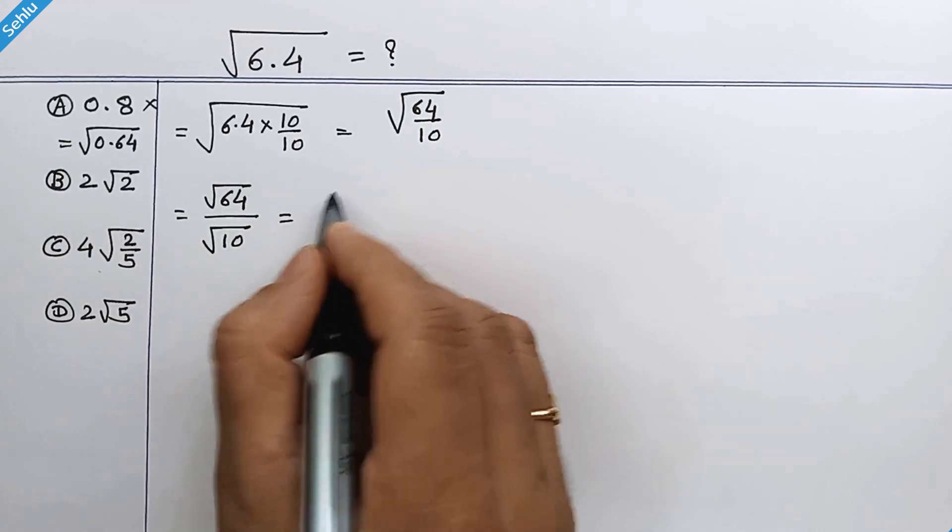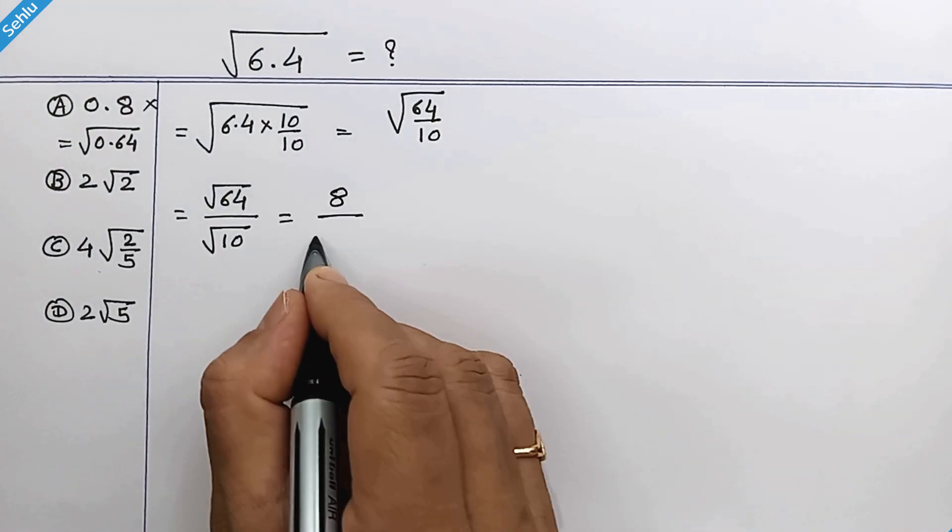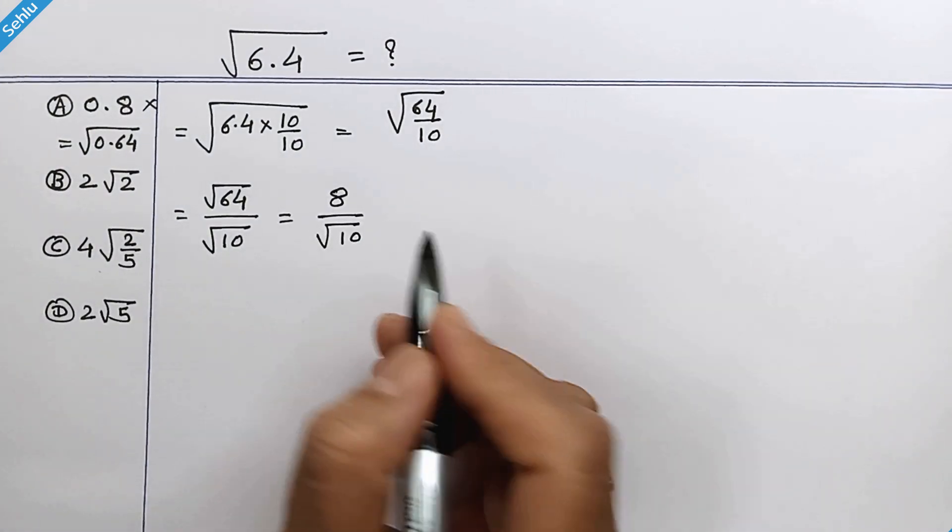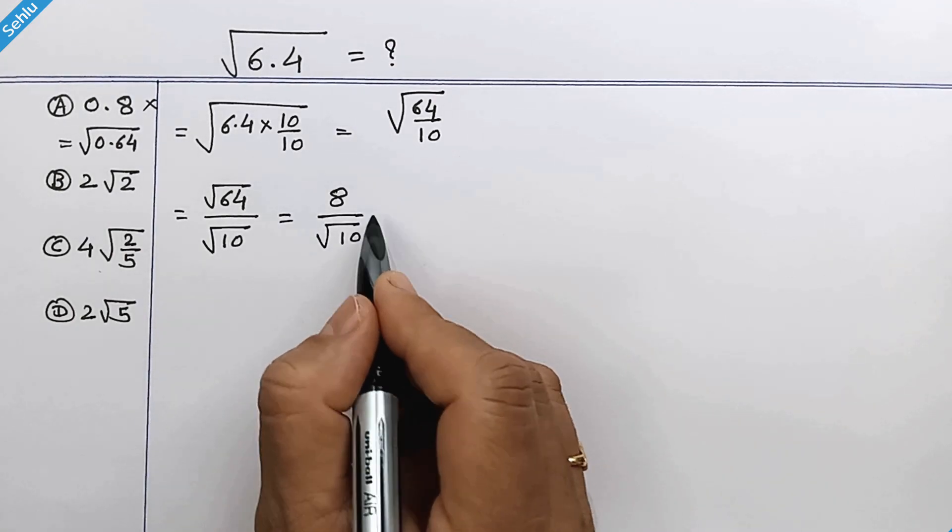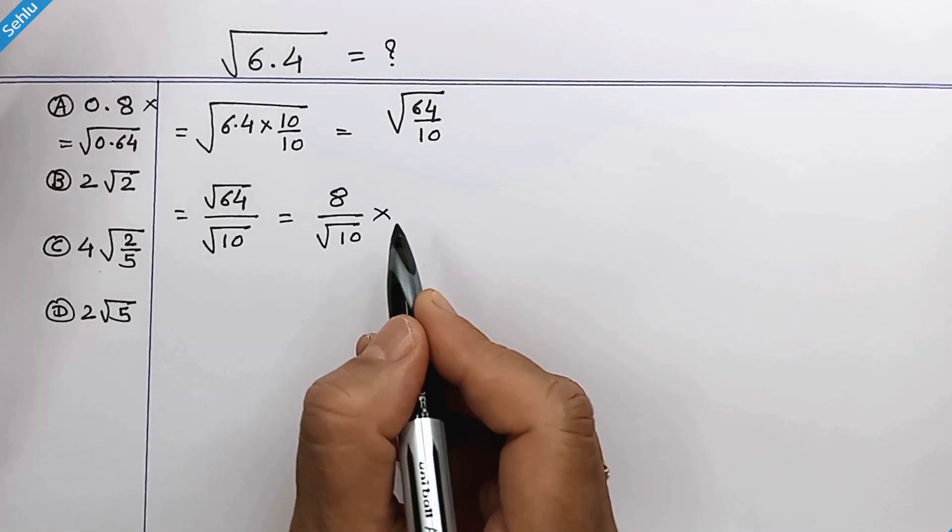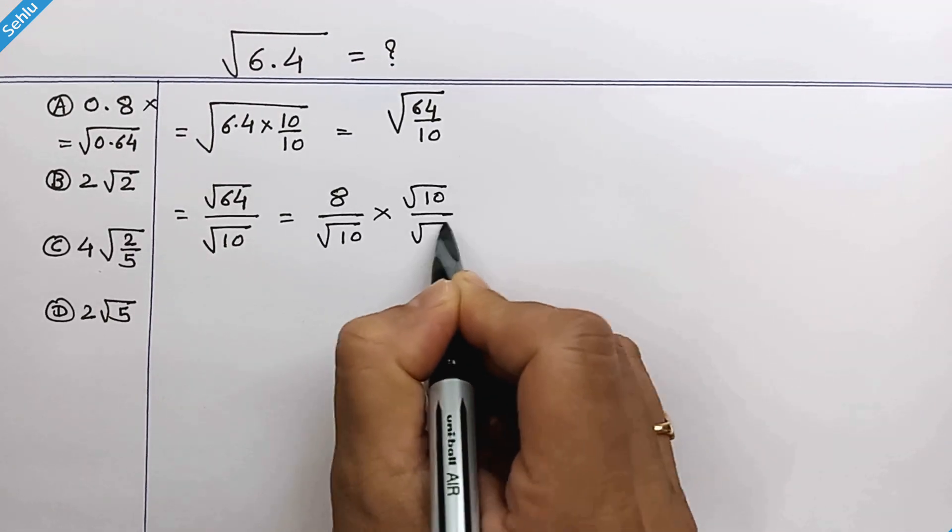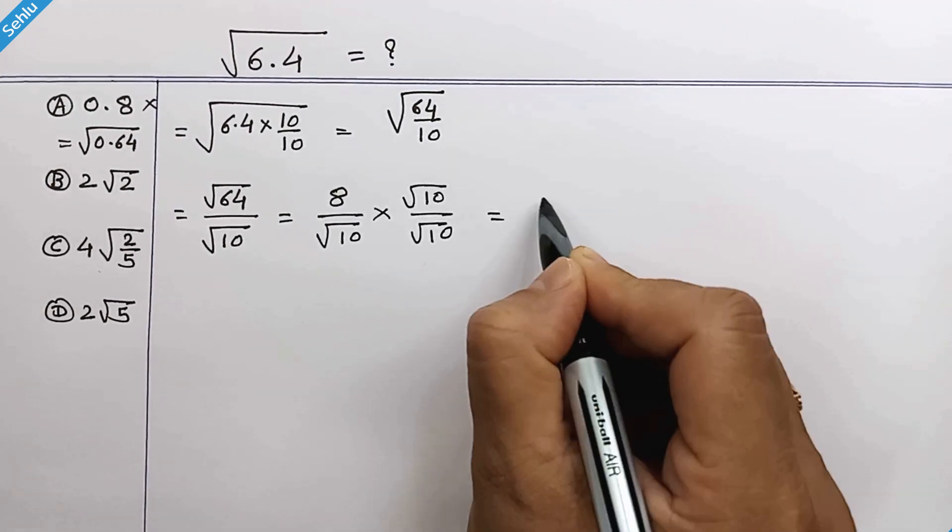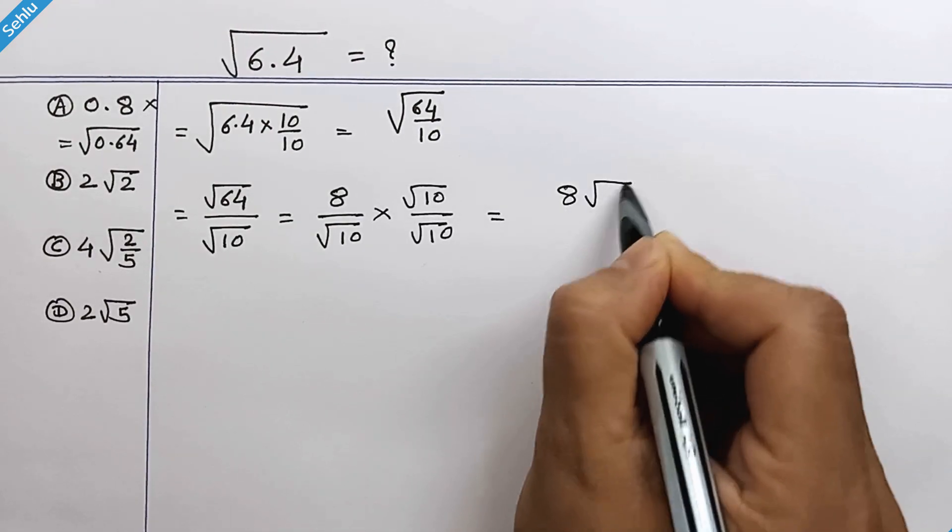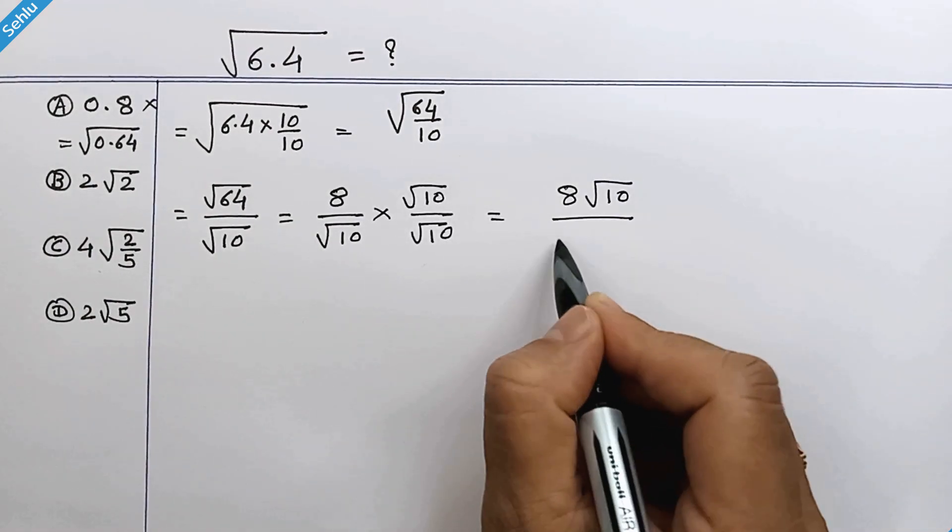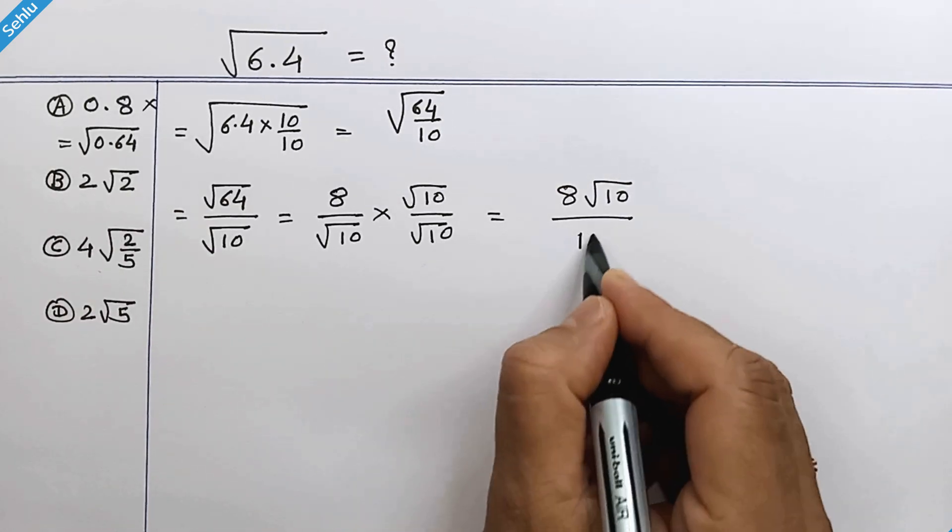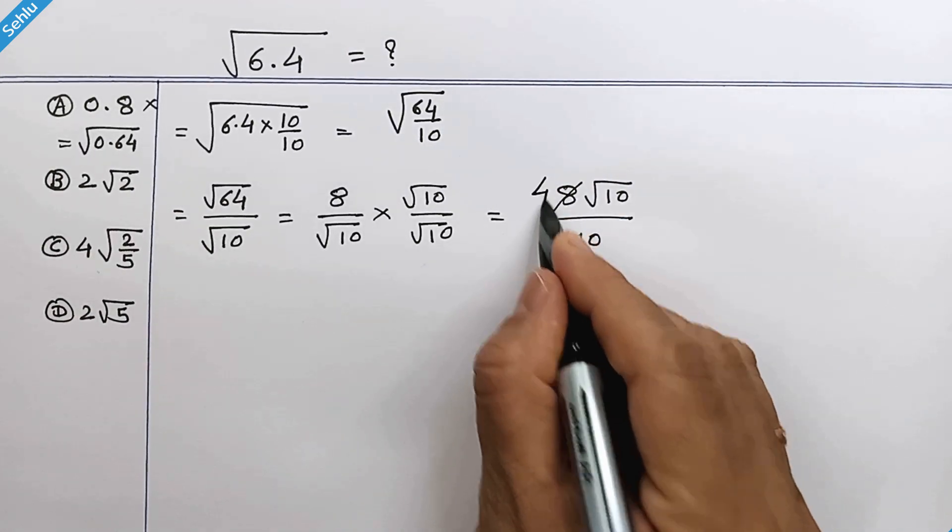Square root of 64 is 8 over square root of 10. Now we need to get rid of this square root sign, so let's multiply by square root 10 over square root 10. This gives us 8 times square root 10 over 10. Simplifying, we get 4 times square root 10 over 5.